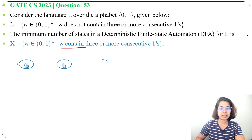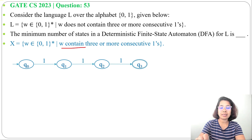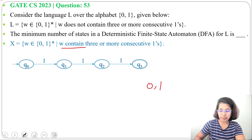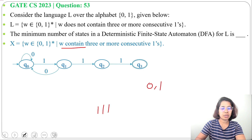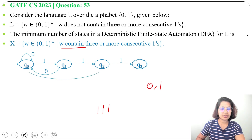For language X, we take four states Q0, Q1, Q2, and Q3, where Q3 is the final state. From Q0 on input '1', go to Q1. From Q1 on '1', go to Q2. From Q2 on '1', go to Q3 — representing three consecutive ones. For zero transitions: from Q0 on '0', self-loop; from Q1 on '0', go back to Q0; from Q2 on '0', go back to Q0. At Q3, both '0' and '1' have a self-loop, since once three consecutive ones are seen, the string is accepted.